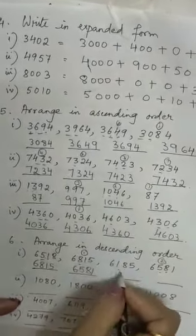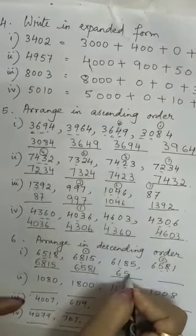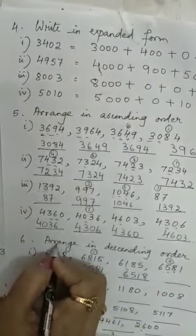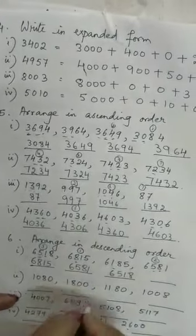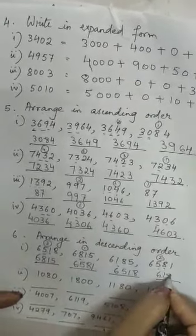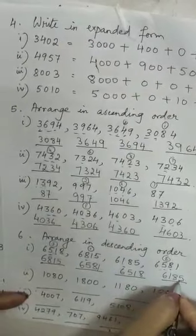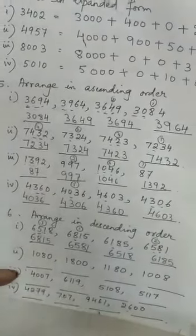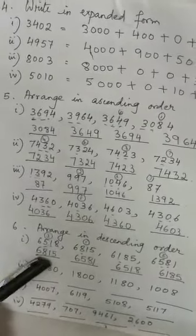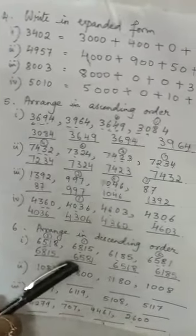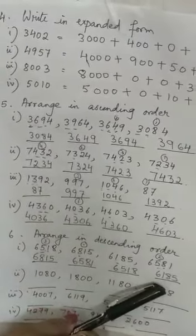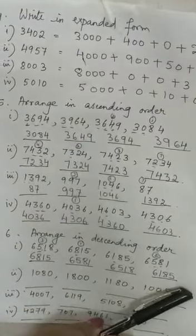Then comes 6518 as the third number. And lastly 6185, because here is 1 in the hundreds place. So the descending order is: 6815 is greater than 6581 is greater than 6518 is greater than 6185.